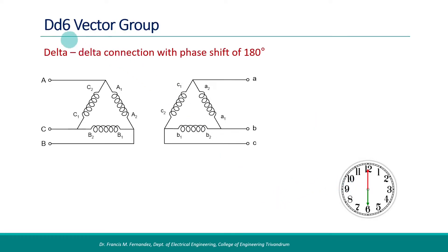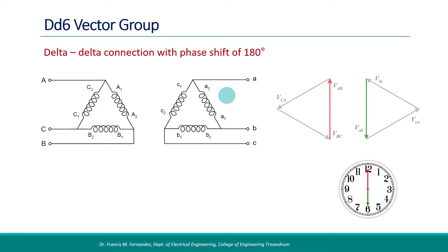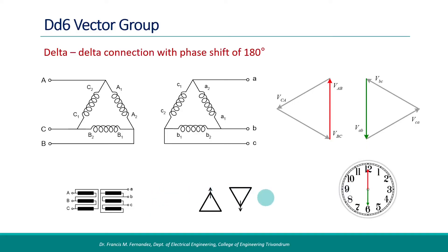Similar is the case with the DD6 vector group. Both the primary and secondary are delta connected, but the polarity of each winding is reversed in the secondary side — on the primary side it is A1, A2, and on the secondary side it is A2, A1, and similarly in other windings as well. This results in a 180-degree phase shift in all the voltages — again a 6 o'clock position. The simplified connection diagram and the displacement diagram are shown.